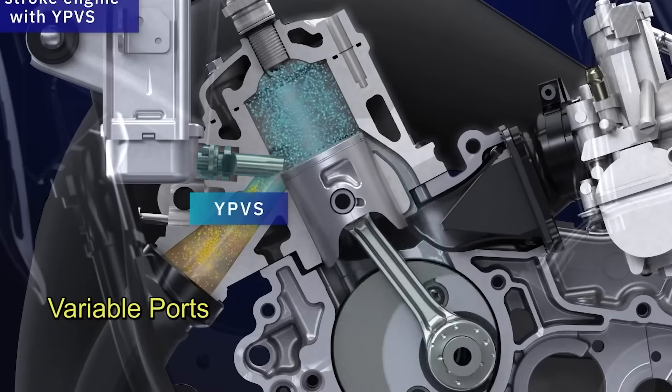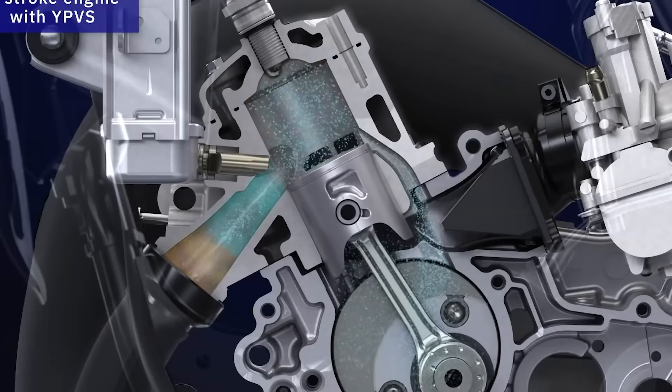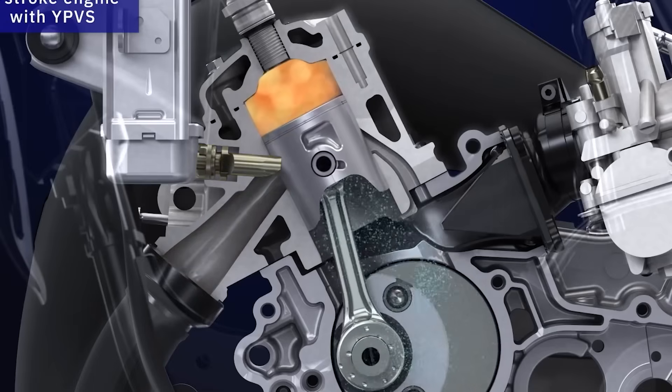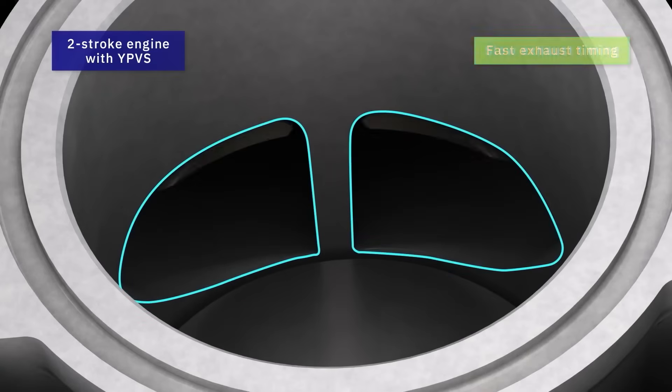What are variable ports? Four-stroke engines use variable camshafts. In two-stroke engines, there are variable ports. This piece moves forward and delays the opening of the exhaust, improving power at low RPM by preventing the mixture from leaving the cylinder.